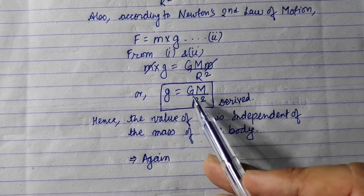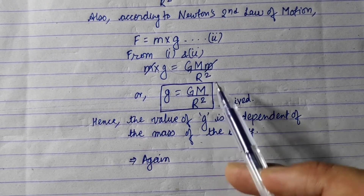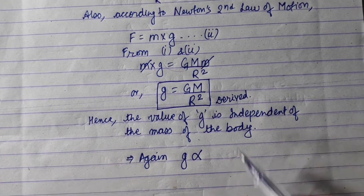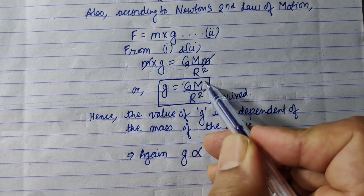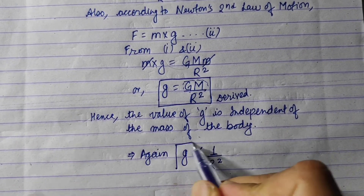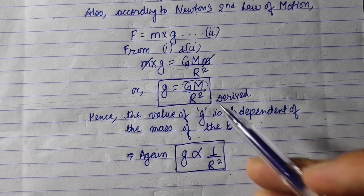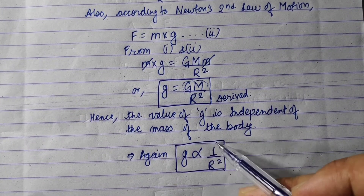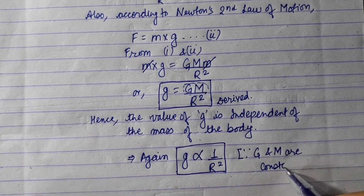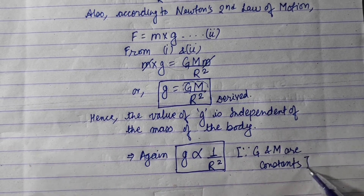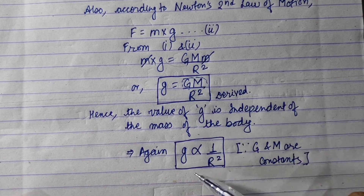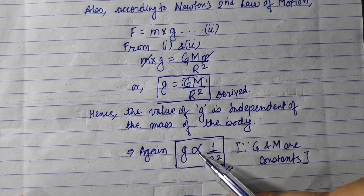In this relation, the universal gravitational constant G and the mass of the planet M are constants. So in any mathematical relation, when we have constants, we can replace them and keep the proportional sign. Since G and M are constants, we can further derive that g is inversely proportional to r square — that is, g is inversely proportional to the square of the radius.